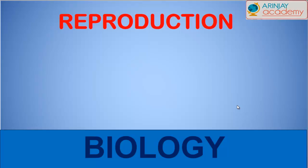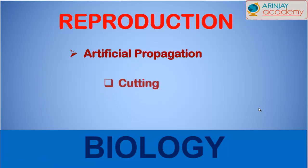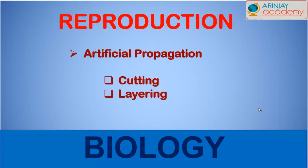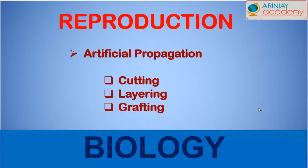Let's see how asexual reproduction takes place. Today we'll look at artificial propagation and the types are cutting, layering and grafting.